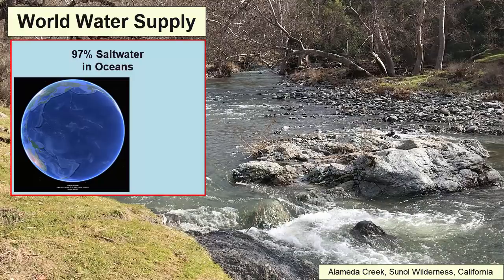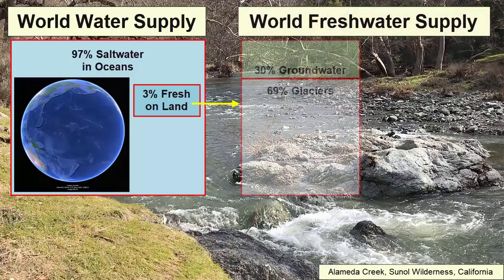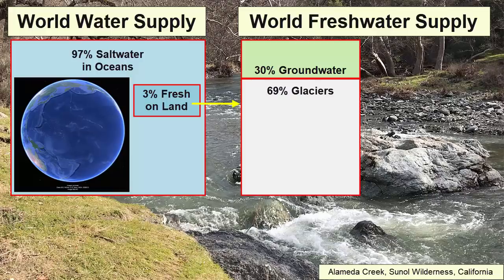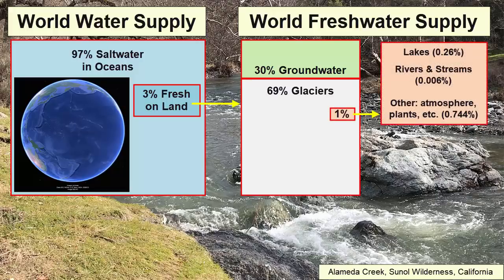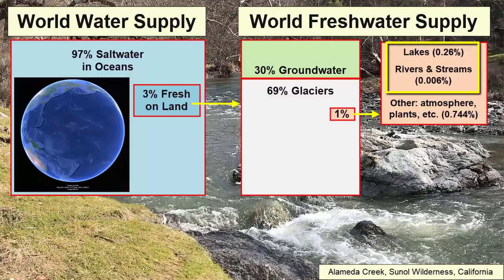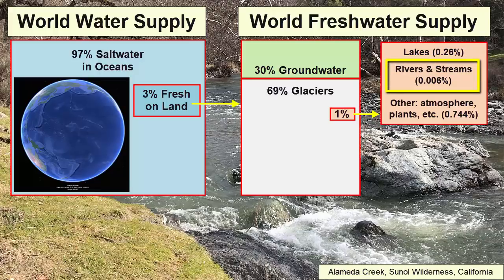97% of all the water on Earth's surface is in the ocean. The remaining 3% is fresh and found on land. Of that freshwater, 69% is trapped in glaciers and ice caps, and 30% can be found in pores and cracks soaked into the ground, known as groundwater. The remaining 1% includes water in the atmosphere, in plants or the biosphere, and water pooling or running across the surface. Water in lakes makes up 0.26% of all freshwater supplies, and rivers, streams, and creeks make up only 0.006% of freshwater on the planet.